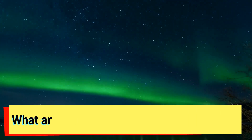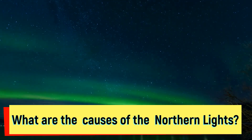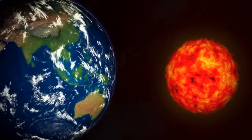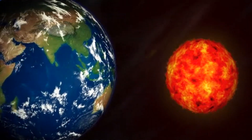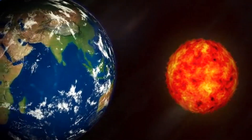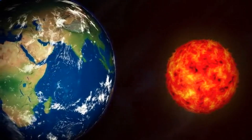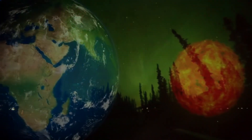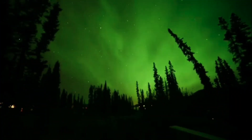The Northern Lights are actually the result of collision between gaseous particles in the Sun's atmosphere with the charged particles released from the Sun's atmosphere. Variations in colour are due to the type of gas particles that are colliding.